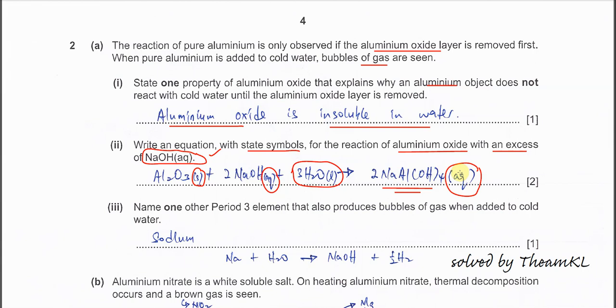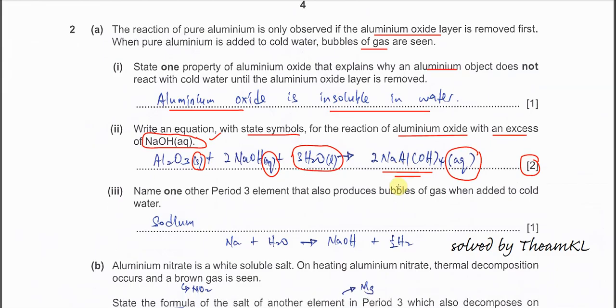Part three. Name one other Period 3 element that also produces bubbles of gas when added to cold water. The easiest answer is sodium. When we add sodium to water, it will form hydrogen gas and sodium hydroxide solution. Sodium is the best answer.